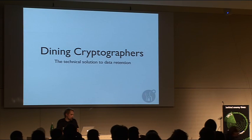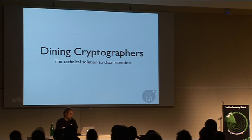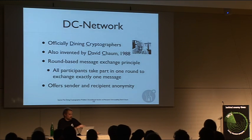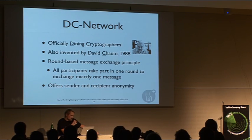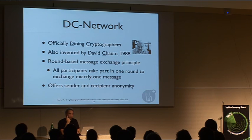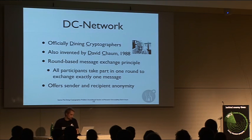Now I'd like to come to the DC part of this talk. Dining cryptographers can be seen as a technical solution to data retention, because data retention cannot attack the anonymity in DC networks. DC networks were officially invented by David Chaum in 1988. It stands for dining cryptographers — and by coincidence those are also the initials of his name. It's a round-based message exchange principle where all participants take part in one round to exchange exactly one message. During one round, one participant can send a message, and all other participants help anonymize the sending process. DC networks offer both sender and recipient anonymity.